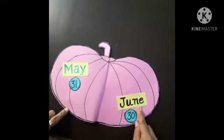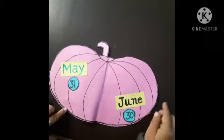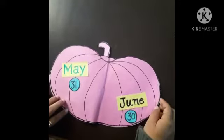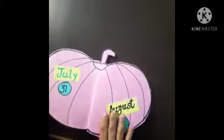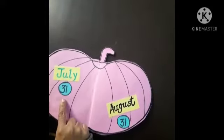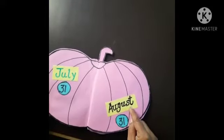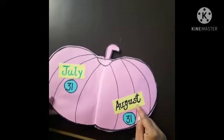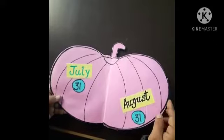The 6th month is June, with 30 days. The 7th month is July, with 31 days. The 8th month is August, with 31 days.